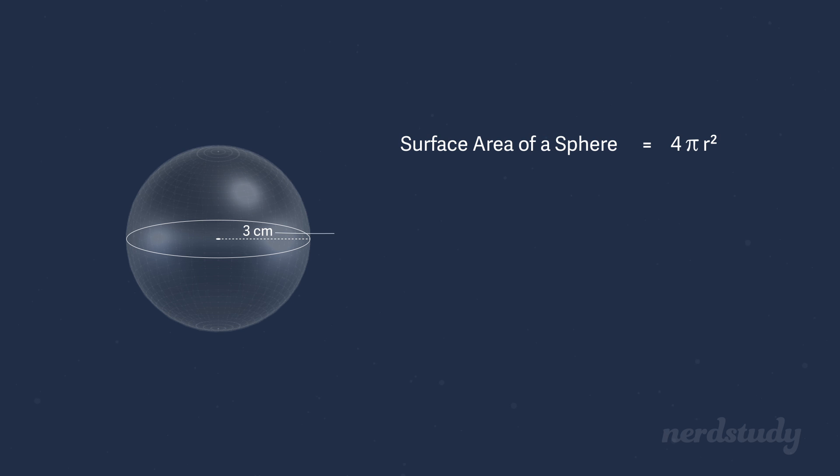So if you plug in our radius of three into our formula, we get four times pi times three squared, which when we calculate is equal to roughly 113.1 centimeters squared. Easy.